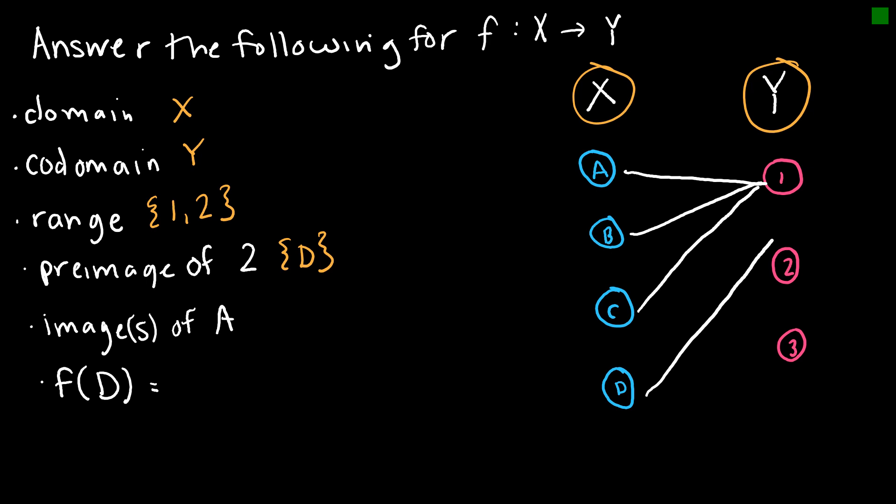And the images of A, which would be what does A map to. So the image or images of A, and that maps to 1. And f of D means what does D map to, and D maps to 2.